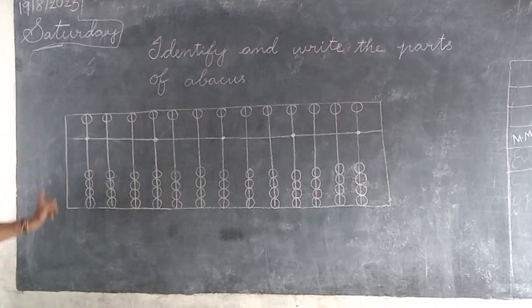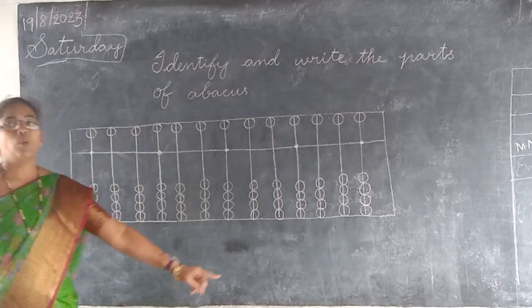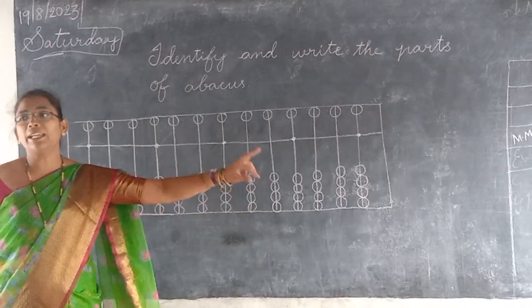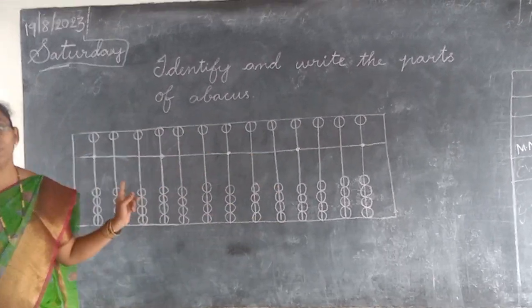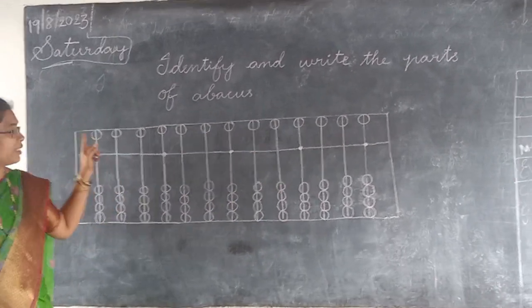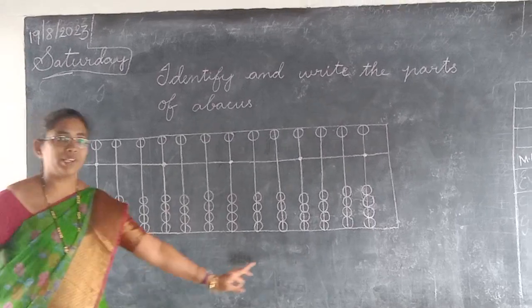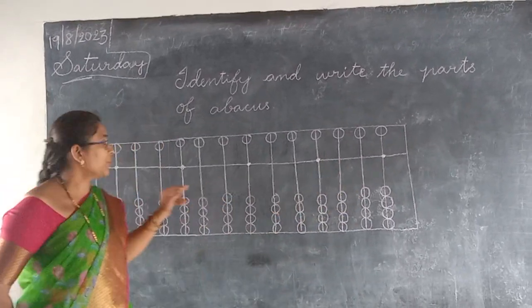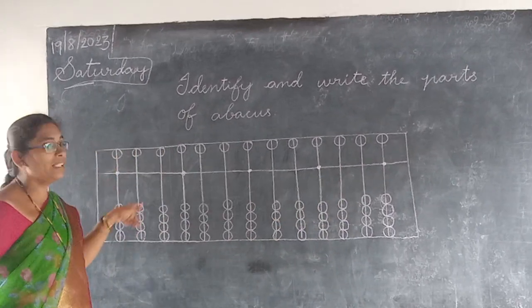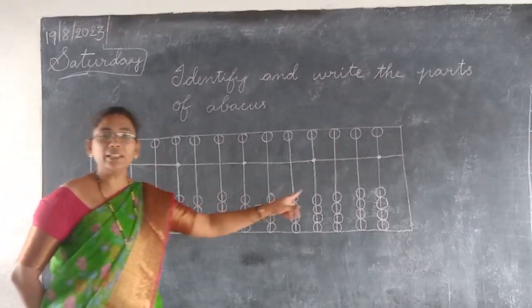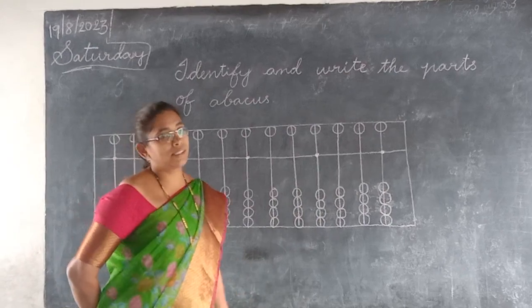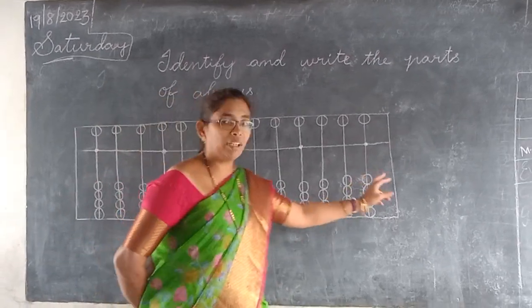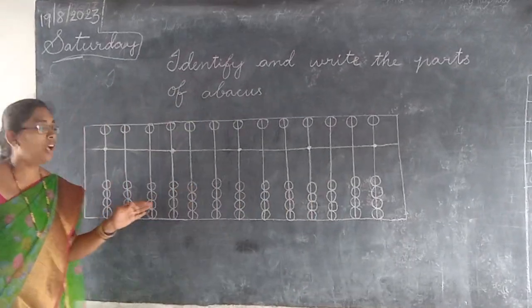Now first we have to draw one rectangle shape box. Next we have to draw 13 dots.